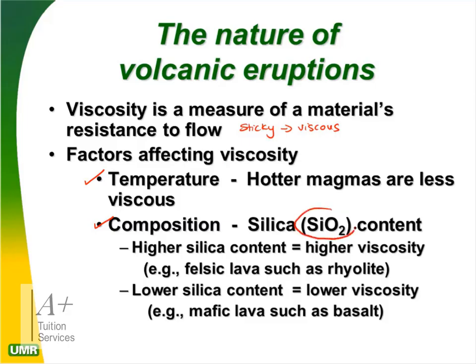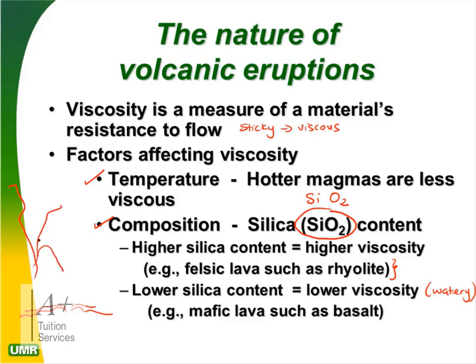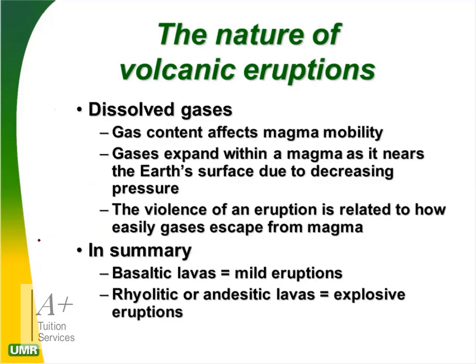Higher silica content means higher viscosity — think about something gluey. An example of high-silica lava is felsic lava such as rhyolite. Low silica content means lower viscosity — watery, runny lava. An example is mafic lava such as basalt, which flows out through cracks and forms layers. High-silica lava will be explosive and pyroclastic.